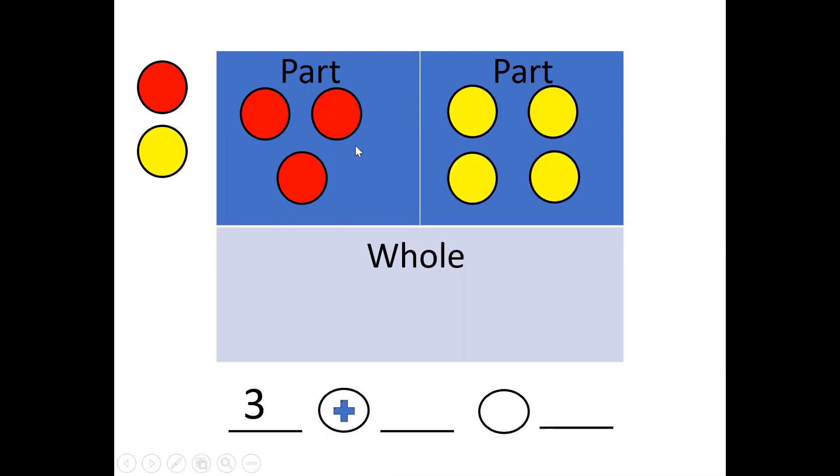Now I've gone and I've counted those three reds and I've written the number three. We know we need an addition symbol because we talked about putting things together and when we're putting things together we're adding them, just like you add ingredients in a recipe, you're adding numbers together.